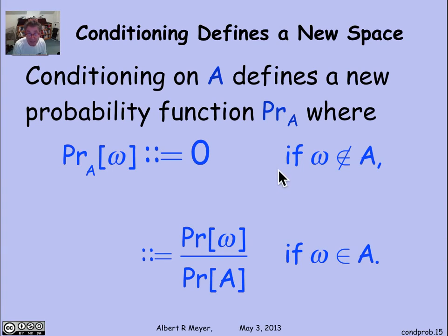Let's be a little bit more formal about that. To be precise, we're going to define a new probability function, probability sub A on the same sample space, where the probability of an outcome is 0 if the outcome is not in A, and it's old probability relativized to the probability of A if omega is in A. So that's the definition of the probability with respect to A of omega. It's a new probability measure on the same sample space.